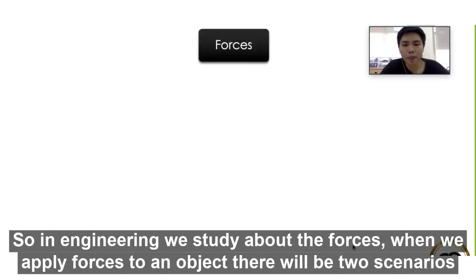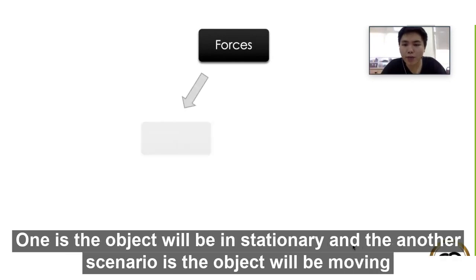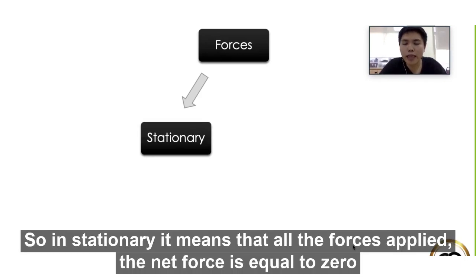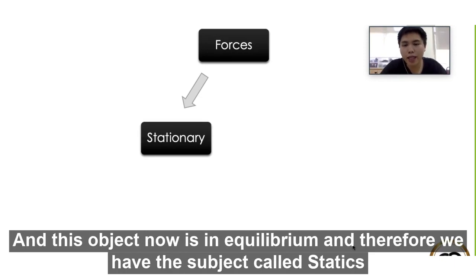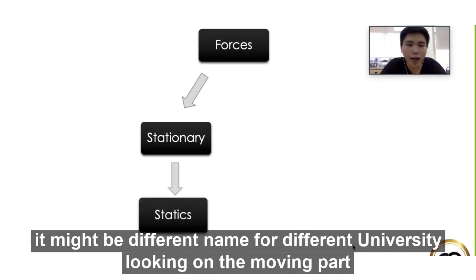In engineering we study about the forces. When we apply forces to an object there'll be two scenarios: one is the object will be stationary, and the other scenario is the object will be moving. In stationary, it means that all the forces applied, the net force is equal to zero, and this object now is in equilibrium. Therefore we have the subject called statics. It might have different names for different universities.